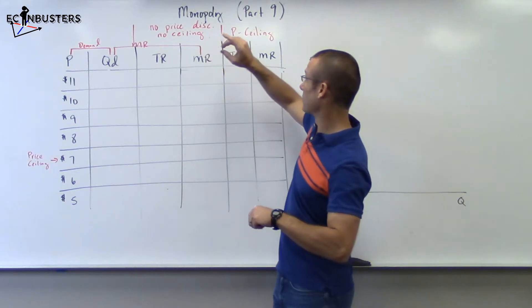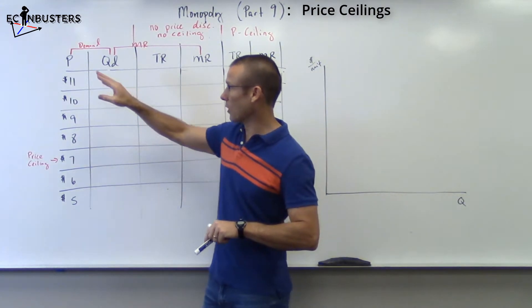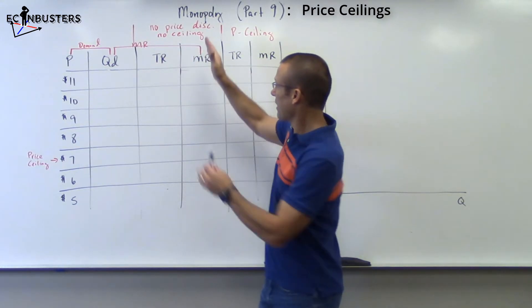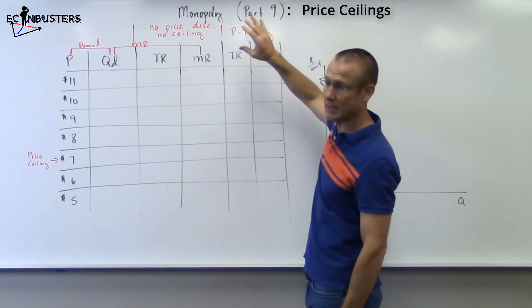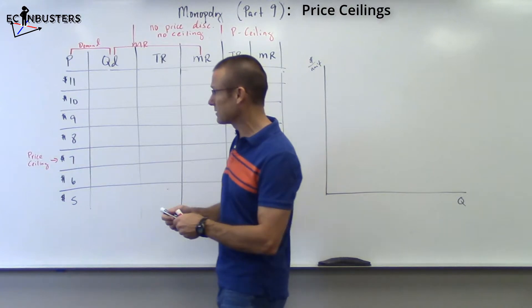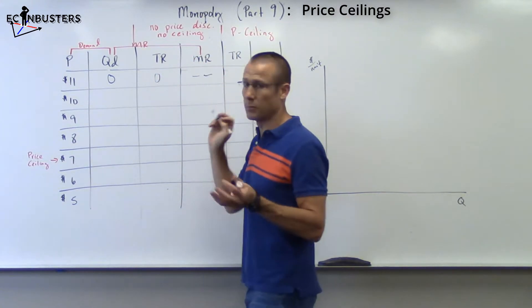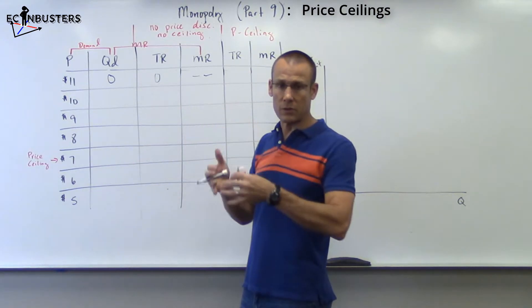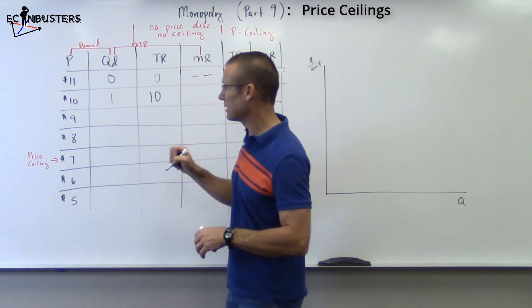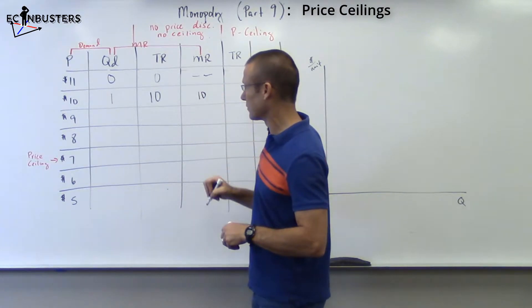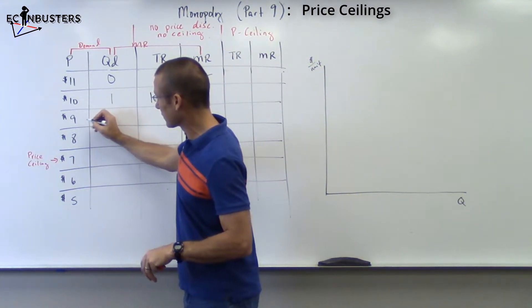This video is about price ceilings, and price ceilings do something very interesting to the MR curve. I have P, QD for demand, and MR. I'm going to do two scenarios: no price discrimination and no ceiling, then with a price ceiling. At a price of $11 nobody's buying — total revenue is zero, MR not applicable. We lower to $10: one buys, total revenue $10, MR is $10. At that first unit, price and MR are on the same line.